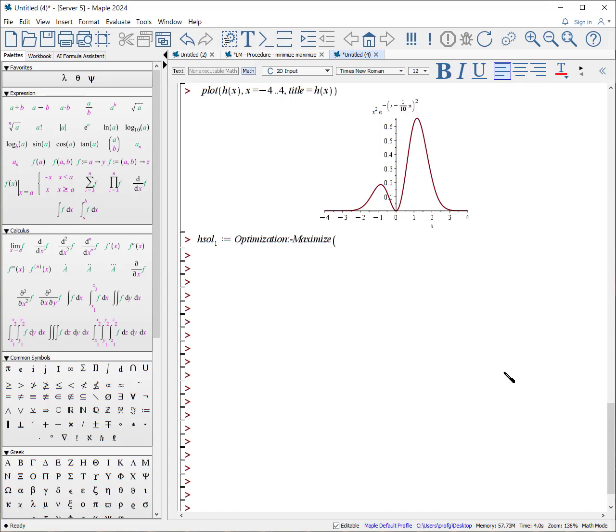where x is somewhere between 0 and infinity, escape, and there it is. It finds the location, what it is, the maximum, and its location. But if I say h_sol_2 colon equals optimization colon dash maximize of h(x),